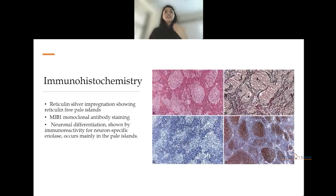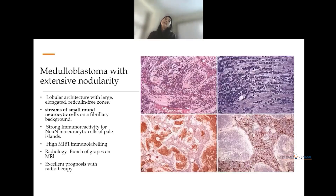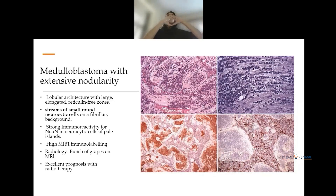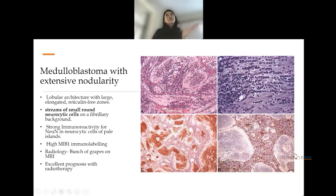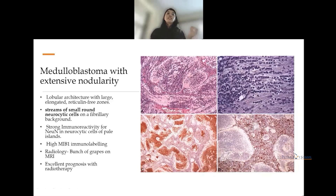Neuron-specific enolase staining highlights the pale islands, signifying neuronal differentiation in those areas. In medulloblastoma with extensive nodularity, there are elongated islands with more reticulin-free zones compared to the dense zones. A streaming or Indian-file pattern of small tumor cells is seen against a neuropil background. The perinodular areas show high MIB-1 proliferation index.